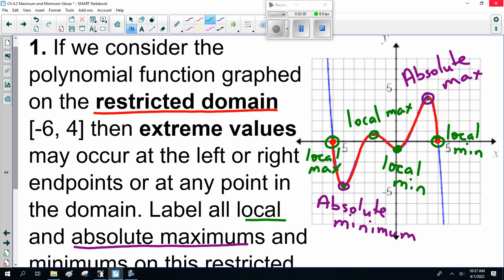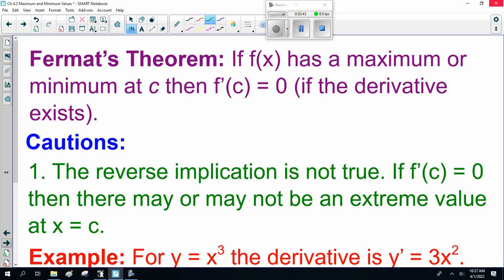So on a graph, can you pick out the maximums and the minimums? And notice on the restricted domain, because if it wasn't restricted, it would keep on going in both directions, and then those last local maximums and minimums wouldn't exist.